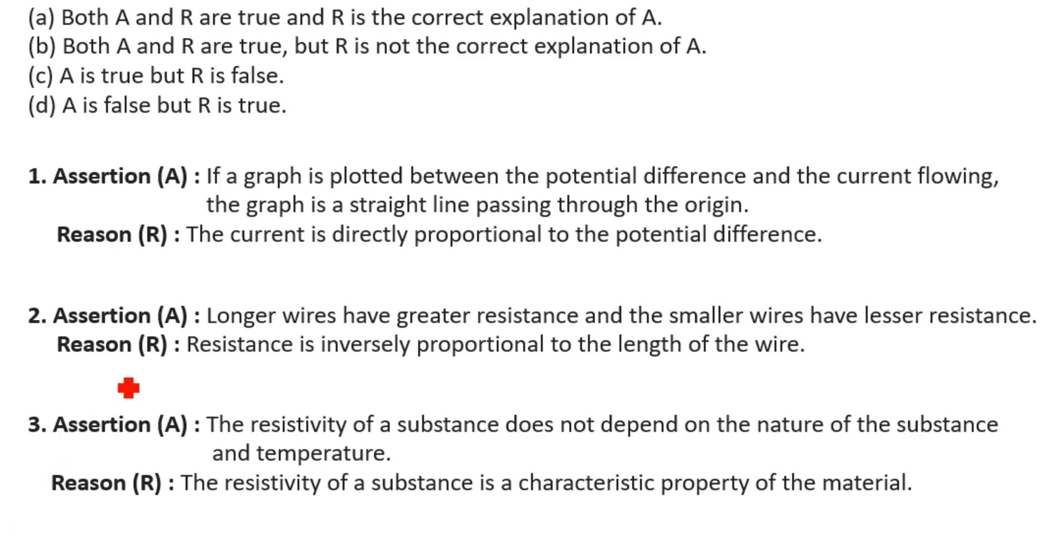Question 1: If a graph is plotted between the potential difference and the current flowing, the graph is a straight line passing through the origin. We will draw the line. This is V, the potential difference, and this is I, the current.